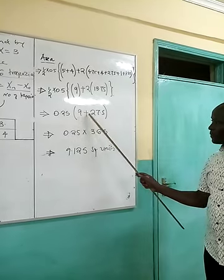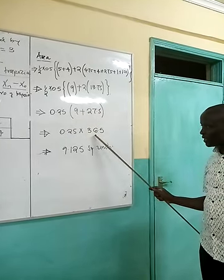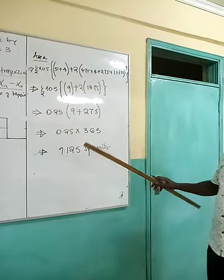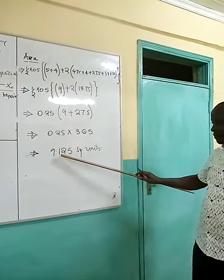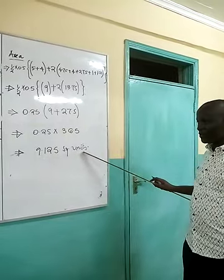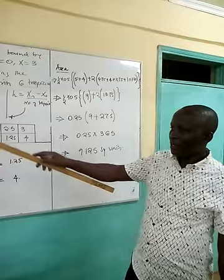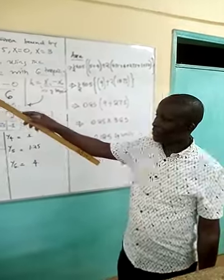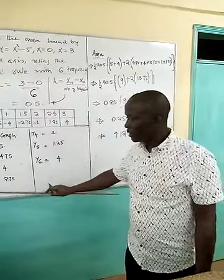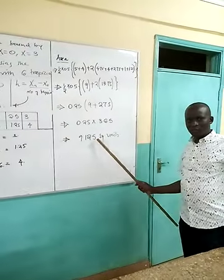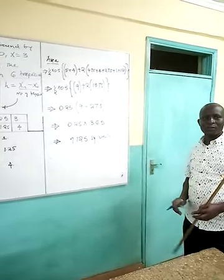Going further, I'll have 9 plus 27.5 as 36.5 multiplied by 0.25 gives me the area as 9.125 square units. This is the area bound by the curve, x equals 0 and x equals 3, using the trapezoidal rule. That is 9.125. Thank you very much.